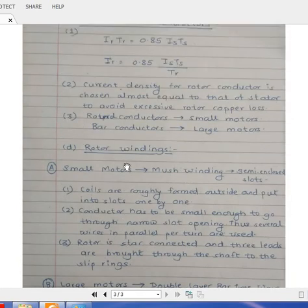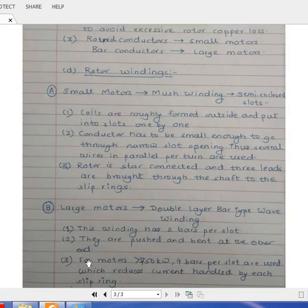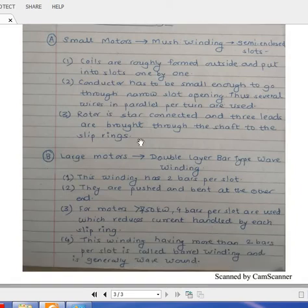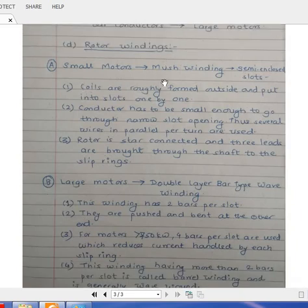Last point of this discussion is rotor windings. You can categorize motors into two parts: small motors and large motors. Small motors, you are going to have mesh winding and slots are semi-enclosed slots. So what is this mesh winding or double layer winding? We are going to understand separately in one of the videos. For small motors, this is a type of winding which is mesh winding.